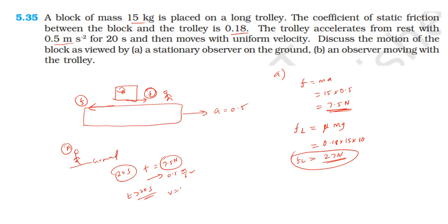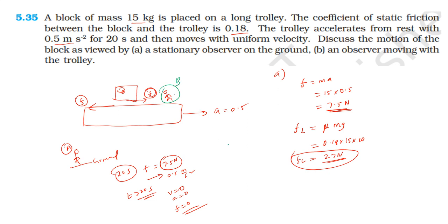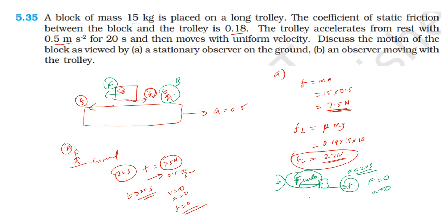After 20 seconds, the trolley moves at constant velocity, so acceleration is zero and friction force becomes zero. For observer A on the ground: block and trolley move together. For observer B on the trolley (non-inertial frame): a pseudo-force acts on the block. The pseudo-force and friction force balance, giving zero net force, so the block appears stationary relative to the trolley.